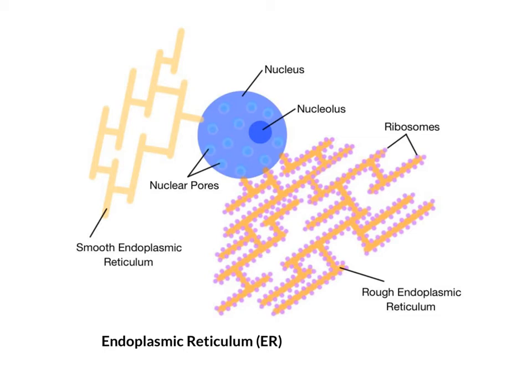There are two types of ER, rough and smooth. The rough ER has a rough appearance due to the ribosomes that are embedded within its membrane. The smooth ER lacks ribosomes, giving it a smooth outer appearance than the bumpy appearance of the rough ER.